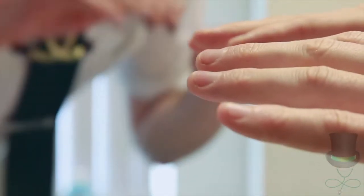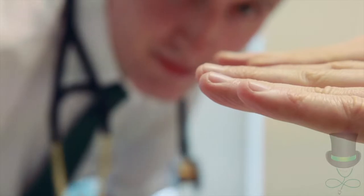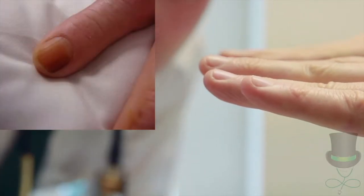Next examine the fingers for signs of clubbing. Look for peripheral cyanosis in the fingertips and tar staining, which is indicative of heavy smoking.